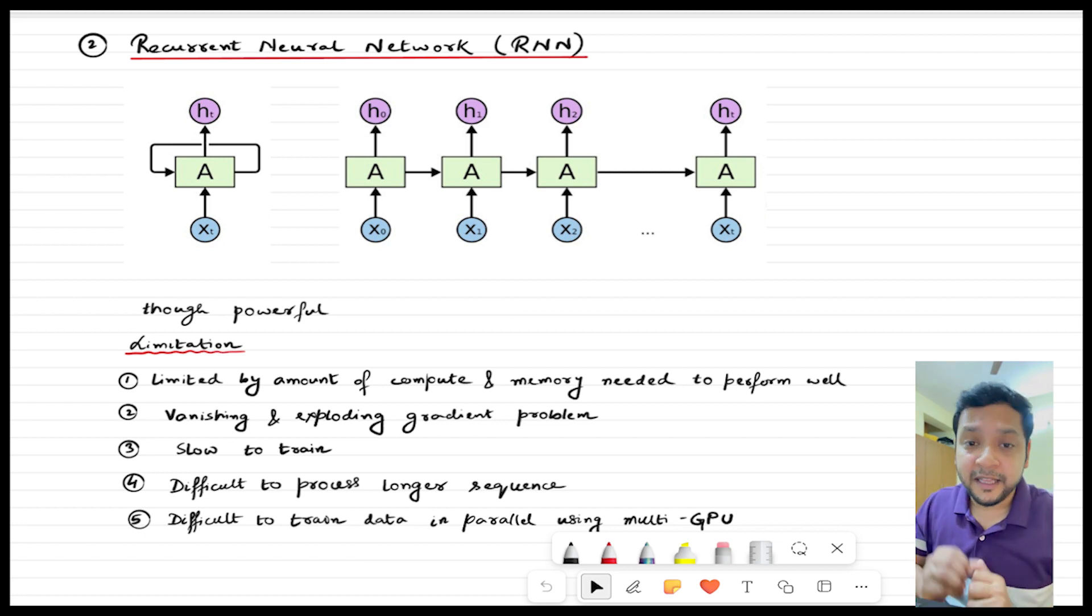Though it's a powerful technique, it has some limitations. First of all, it's limited by the amount of compute and memory needed to perform well. And if the RNN structure is large, then it leads to vanishing and exploding gradient problems, meaning that the weight updation is not happening in case the RNN structure is very large.